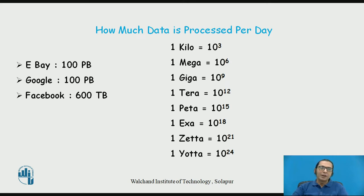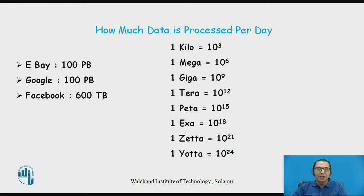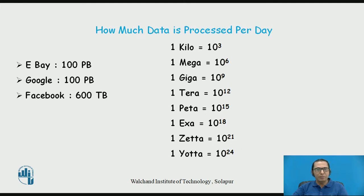How much data is processed per day? We are living in an era of data. I remember in the 1990s we used floppy disks of 360 KB — having kilobytes of data was a luxury. But today we talk about megabytes, gigabytes, terabytes, and petabytes (10 to the power 15). For example, eBay processes 100 petabytes of data per day, Google processes almost 100 petabytes per day, and Facebook processes 600 terabytes of data every day.